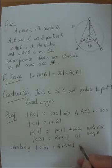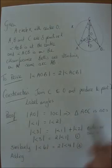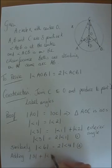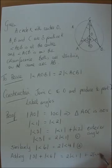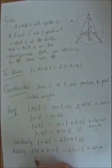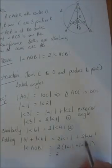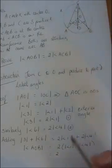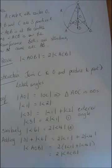Now I'm going to add these two results together. Adding angles 3 and 6 gives the big angle AOB at the centre. Angle 3 was 2 times angle 1, and angle 6 was 2 times angle 4. So adding them together: angle AOB equals 2 times the measure of angle 1 plus angle 4. Angle 1 plus angle 4 is angle ACB. Therefore AOB equals 2 times ACB, and that's my theorem proved.